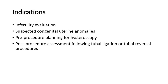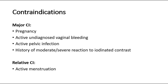Now let's look at the contraindications of HSG. The major contraindications are pregnancy, active undiagnosed vaginal bleeding, active pelvic infection even if the patient is receiving antibiotic therapy, and a history of a moderate or severe reaction to iodinated contrast. There are also relative contraindications such as active menstruation.